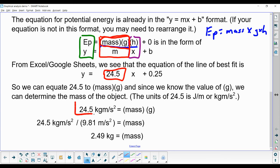So we can write this: 24.5 kilogram meter per second squared, because that's the units of our slope. It's the same as mass times g. If we want to find mass, we need to divide both sides by g. So we divide both sides by 9.81, and we find that the mass of this unknown object is 2.49 or about 2.5 kilograms.